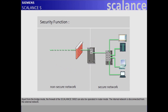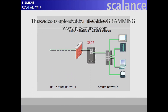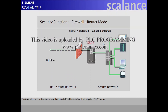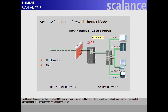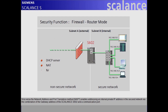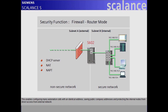Apart from bridge mode, the firewall of the Scalance S602 can also be operated in router mode, where the internal network is disconnected from the external network. The internal nodes can thereby receive their private IP addresses from the integrated DHCP server. The network address translation method, NAT, enables using private IP addresses in the internally secured network by assigning private IP addresses to public IP addresses via an assignment list. The network address and port translation method, NAPT, enables addressing an internal private IP address in the secured network via the combination of the gateway address of the Scalance S602 and a communication port. This enables configuring many automation cells with an identical address, saving public company addresses, and protecting the internal nodes from direct access from the external network.